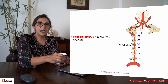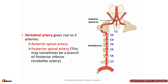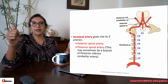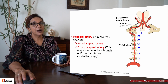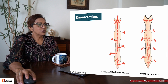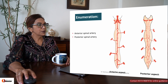Let's begin the story from the vertebral artery, a branch of the subclavian artery. The vertebral artery ascends through the foramina transversaria, passes through the foramen magnum, and gives rise to two anterior spinal arteries — one on the right and one on the left. It also gives rise to posterior spinal arteries, which are sometimes a branch of the vertebral artery and sometimes a branch of the posterior inferior cerebellar artery.